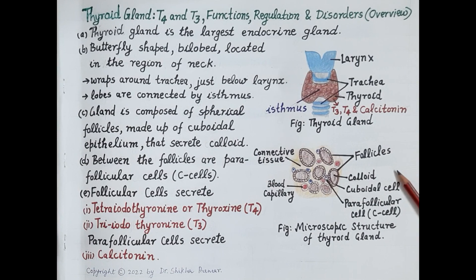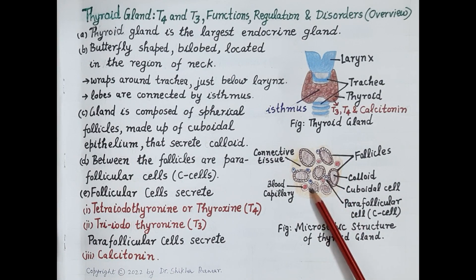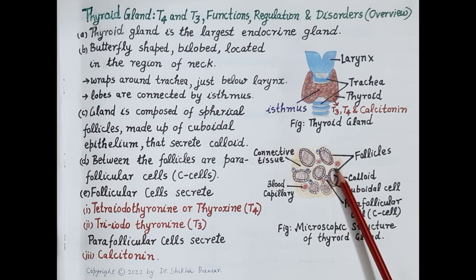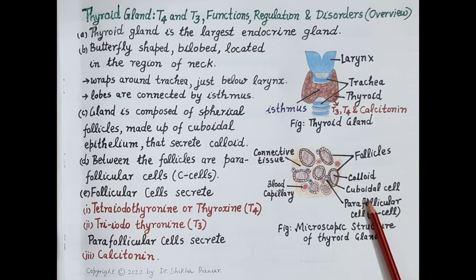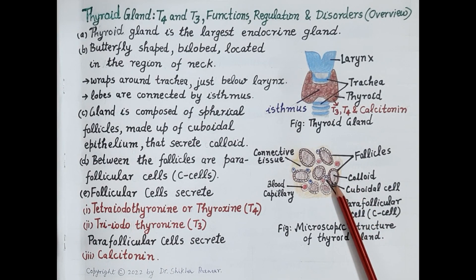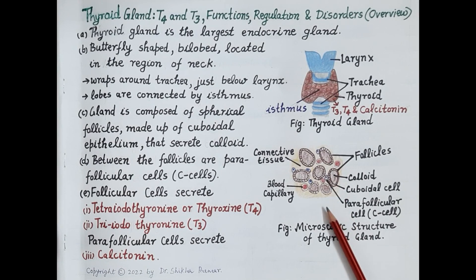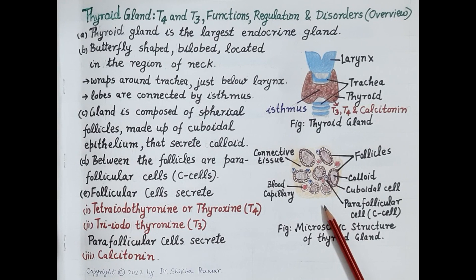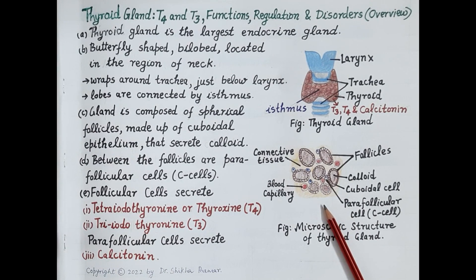Now look at the microscopic structure of the thyroid gland. The thyroid gland is composed of spherical follicles made up of cuboidal epithelium. These cuboidal cells secrete a sticky fluid called colloid, which fills the central cavity of these follicles. Thyroid hormones T3 and T4 are produced by these follicles.